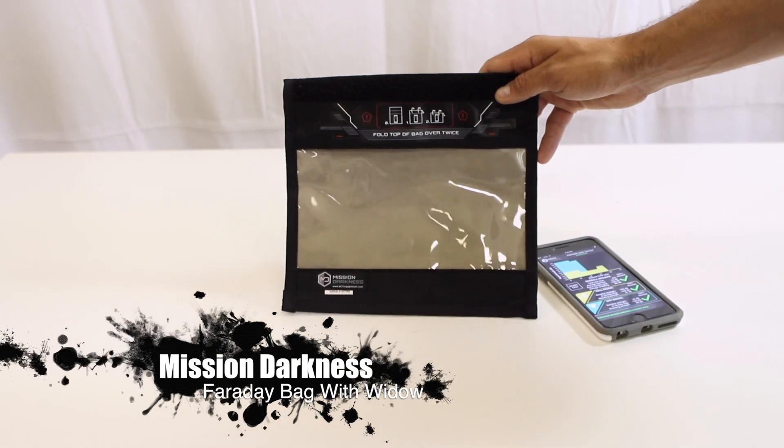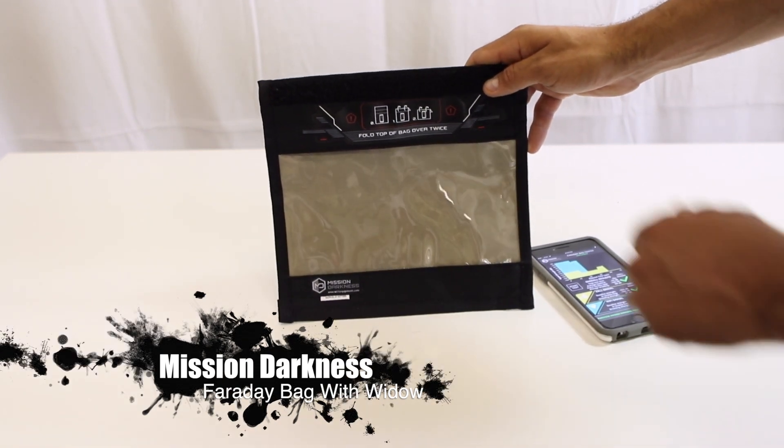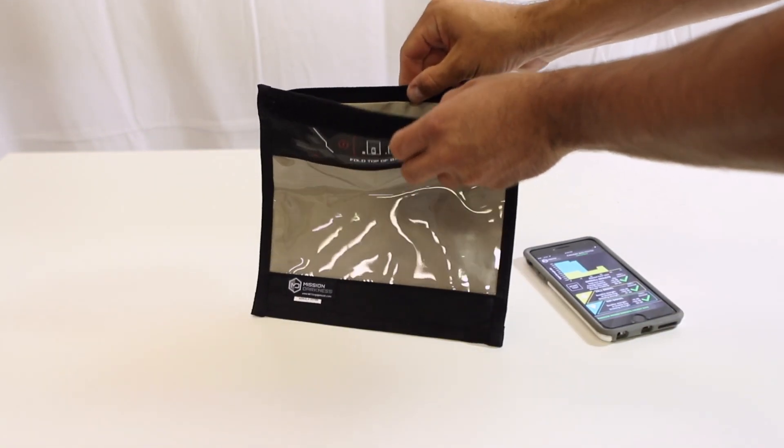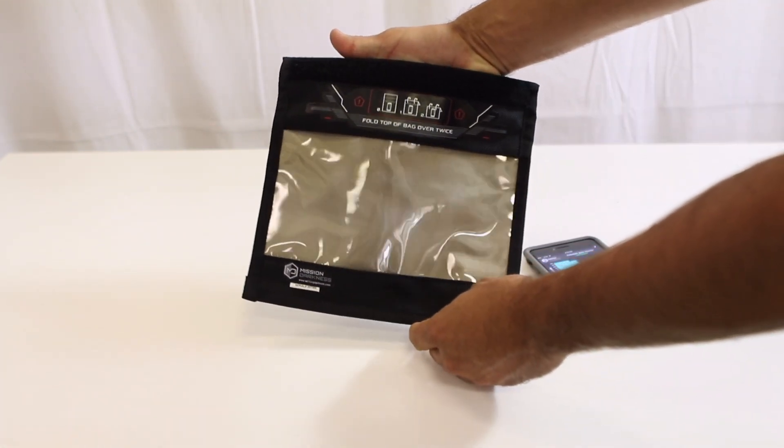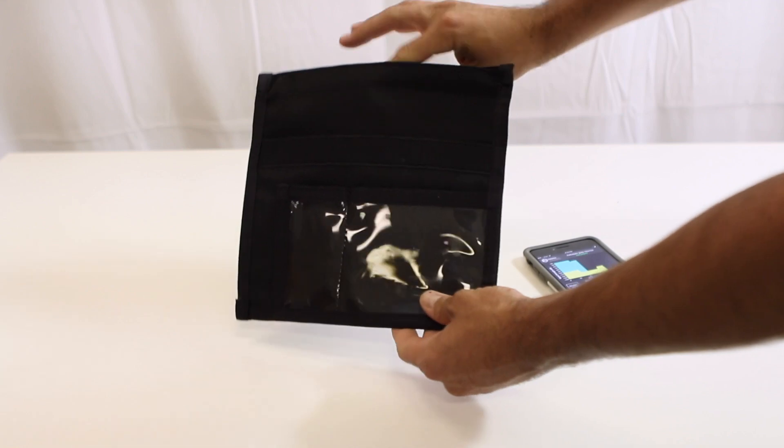This is a demo of the Mission Darkness window Faraday bag for phones. This bag fits phones, small tablets, and other electronics. It has a window here so you can see the phone screen through it, which we're going to show in a minute.